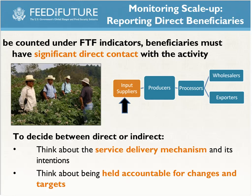When deciding whether to count direct or indirect beneficiaries, the service delivery mechanism is what matters. Is it your intent to get your message all the way down to the farmers, even through a cascade or facilitated training process? If your ultimate goal is behavior change in farmers, that's what you want to be accountable for. You want some mechanism through which you can give yourself credit for making changes at that level.